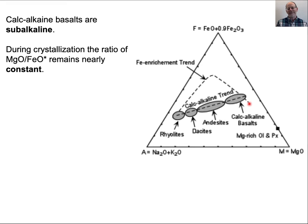You don't see that iron enrichment trend in arc volcanoes, especially continental arc volcanoes. The compositions of the magmas just trend straight away from the original composition and end up with rhyolites at basically the same point where the iron enrichment trend ends up, but they get there by a different mechanism. Clearly, something else is crystallizing from these magmas to drive the composition in this direction compared to more typical mid-ocean ridge basalts.